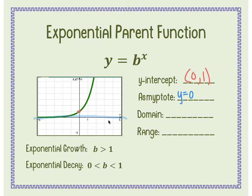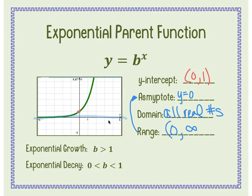The domain for exponential functions is always all real numbers. For the range, this graph is going up, so look back at the asymptote. Whatever number we use for the asymptote is the number we use for the range. The lowest value is 0, and since it goes up forever, we write infinity. Since it's an asymptote and never touches, both bounds use parentheses.